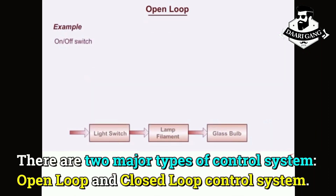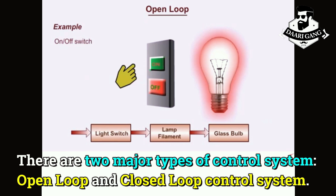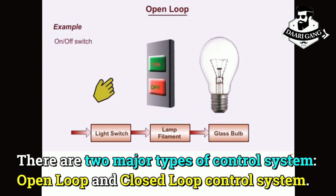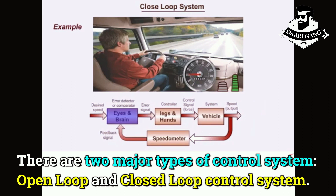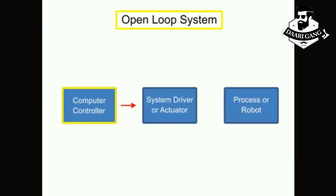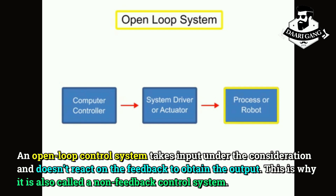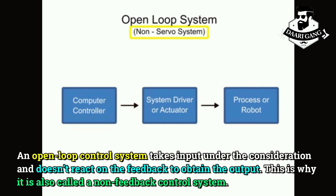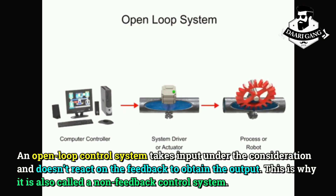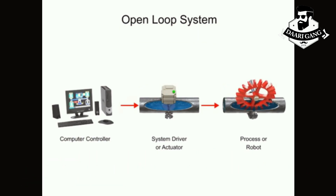There are two major types of control systems: open loop and closed loop control systems. An open loop control system takes input into consideration and does not react on feedback to obtain the output, which is why it is also called a non-feedback control system.